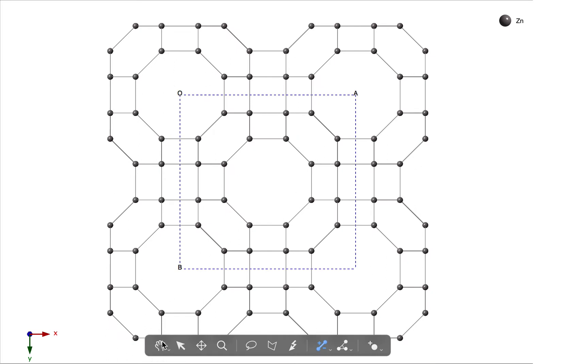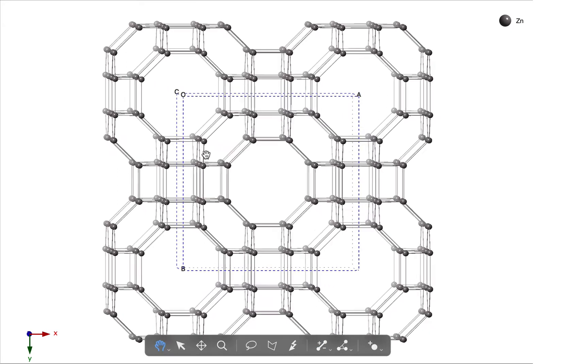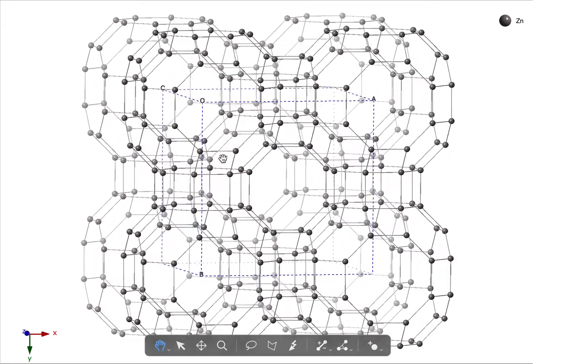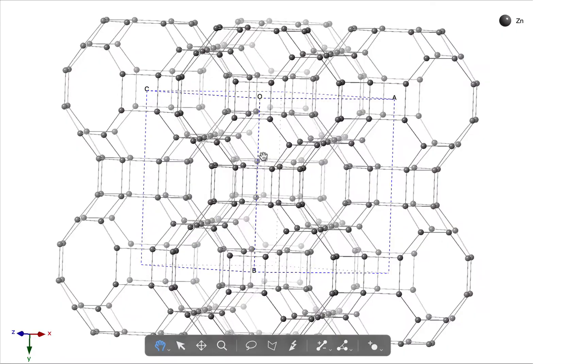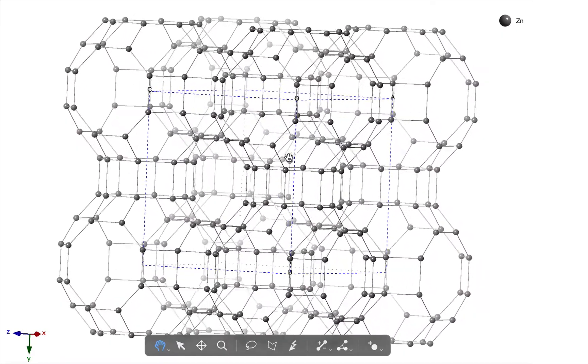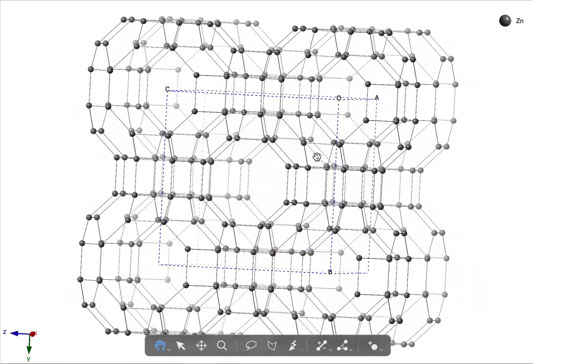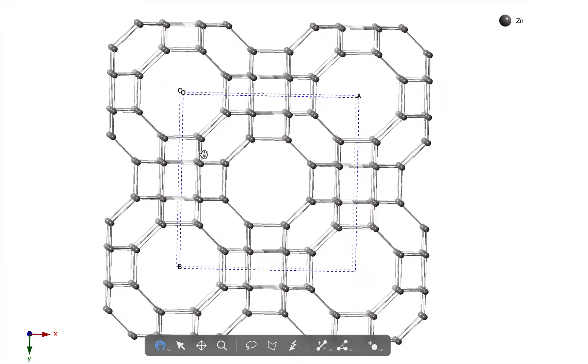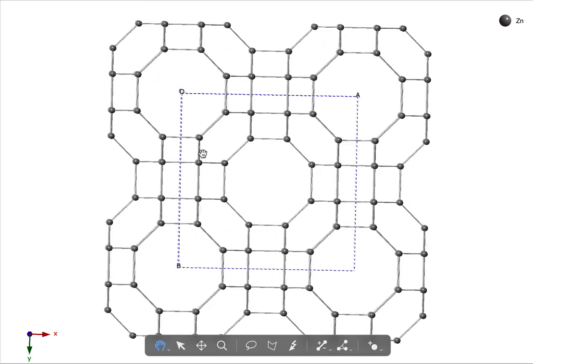If we click and drag with the mouse to rotate this, you can see that we have these very large cages together with connectors between them. So we want to represent these using large polyhedra.